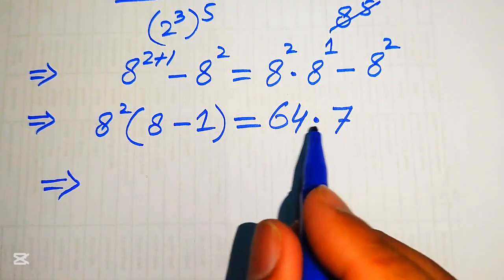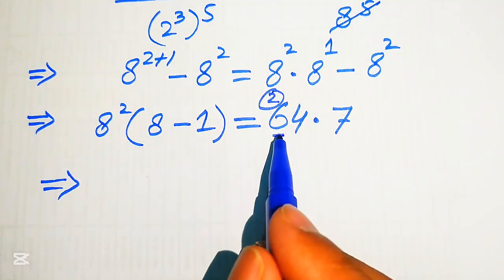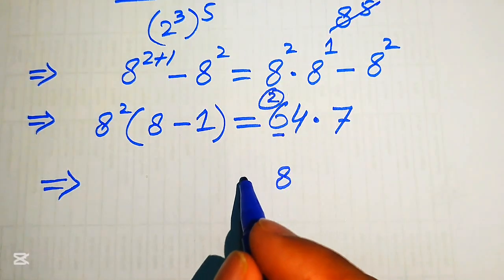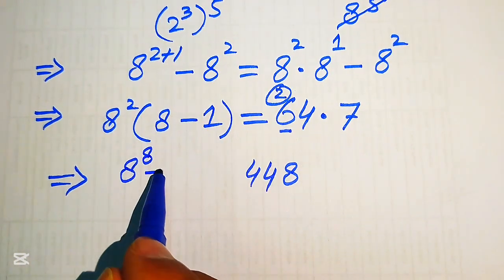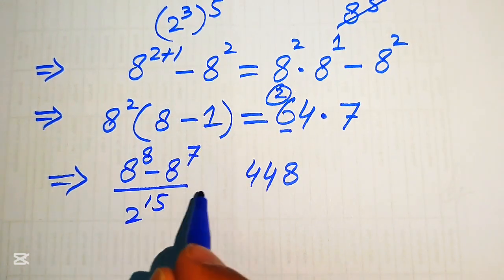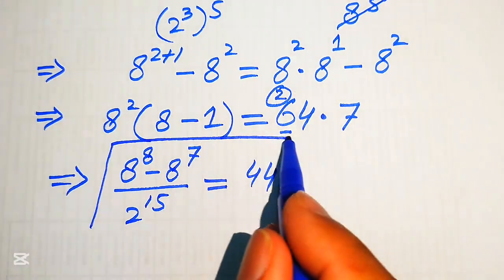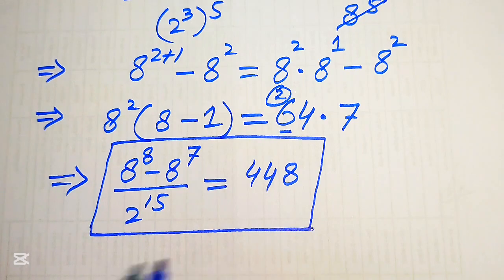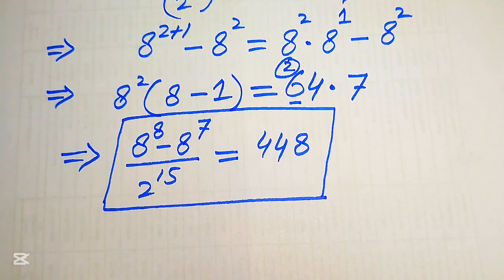We multiply: 7 times 4 is 28, write 8 carry 2; 7 times 6 is 42, plus 2 becomes 44. So finally, 8 to the power of 8 minus 8 to the power of 7, divided by 2 to the power of 15, equals 448. This is our final answer from the second method. From both methods we get the same answer: 448. Thank you so much for watching this video — please subscribe to my channel for more exciting videos.